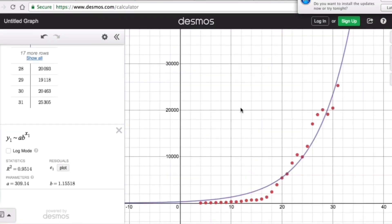So the coronavirus cases in the United States can be mathematically modeled using the exponential function. And so from here, we can go ahead and write the equation that models this problem as y is equal to 309.14, parentheses, 1.15518, parentheses, exponent x.